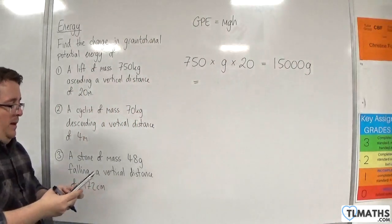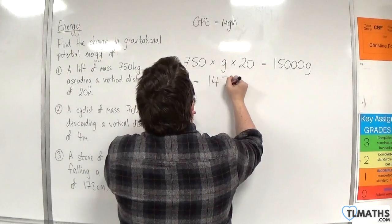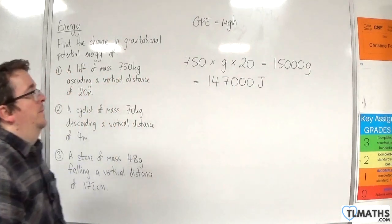Which, if we plug in G as 9.8, we would have 147,000, and that's joules.